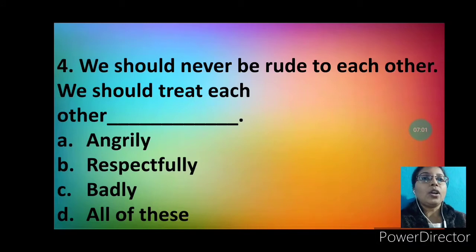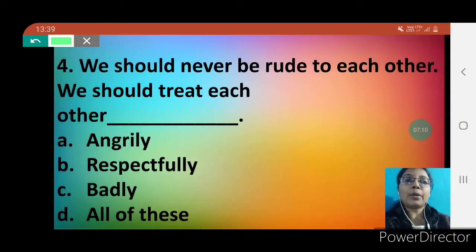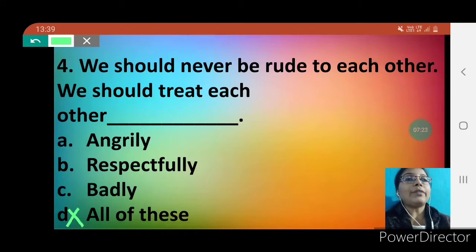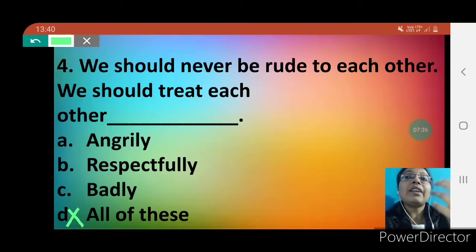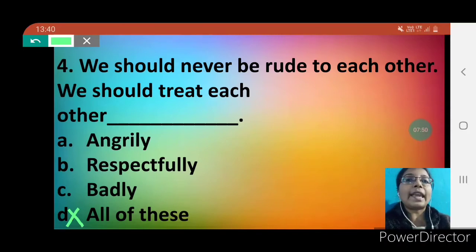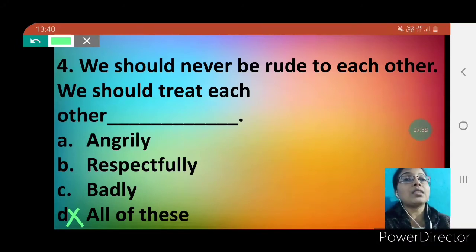Question number 4: we should never be rude to each other — we should treat each other dash. Option A is angrily, option B is respectfully, option C is badly, option D is all of these. All of these is not correct since we need one answer. If we behave angrily or badly with anyone, they will not want to talk to us. So options A and C are wrong. The correct answer is option B — respectfully.